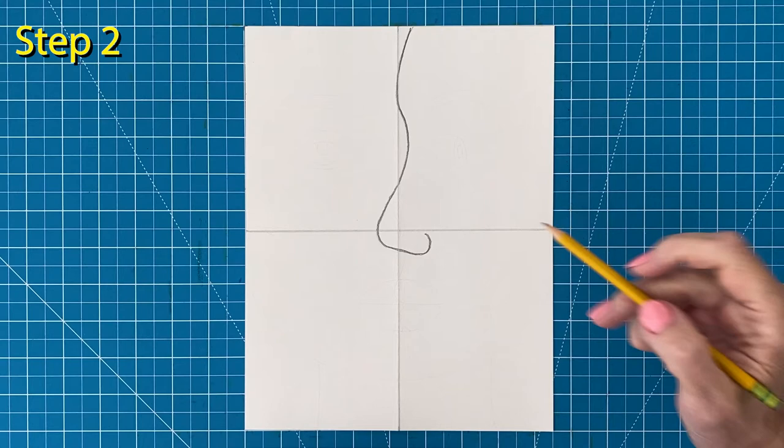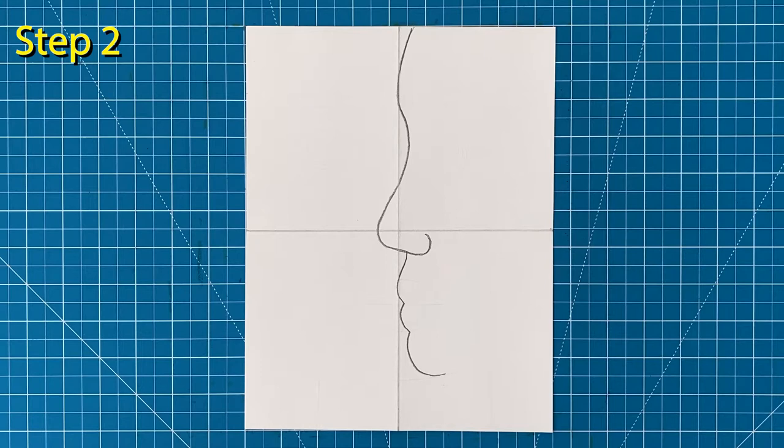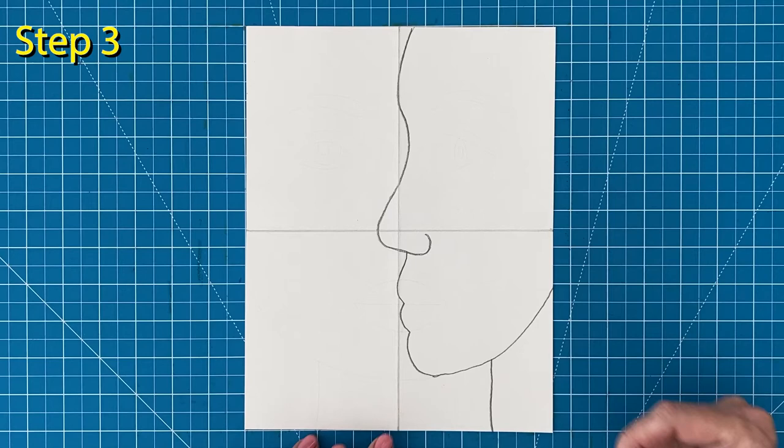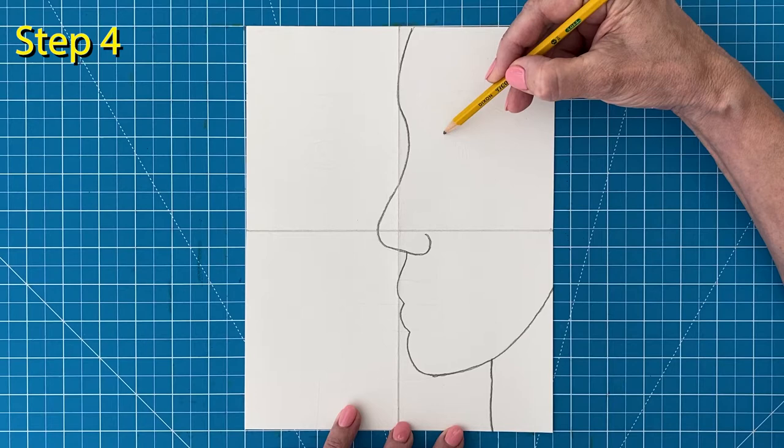Step number three: Continue the chin line into the cheek and add a neck below. Step number four: Draw a simple sideways eye like this and add eyelid lines above it.